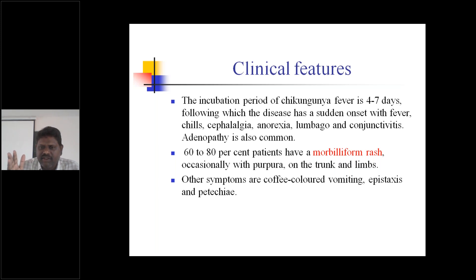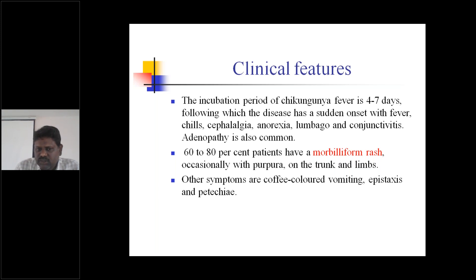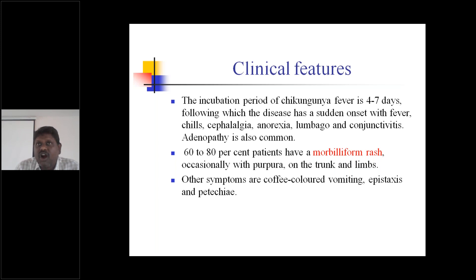60 to 80 percent of patients have a morbilliform rash. There is a different type of rash in this case — called morbilliform rash — occasionally with purpura on the trunk and limbs. Other symptoms are coffee-colored vomiting, epistaxis — that is bleeding from the nose — and petechiae will be present.